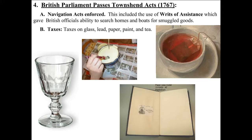In 1767, after the Stamp Act was repealed — meaning taken away or canceled — the Townshend Acts were passed. First, the Navigation Acts were enforced, which is the rule that the colonies could only trade with Great Britain and no other country. That goes back to the idea of mercantilism, where the only point of a colony is to make money for the home country. The Navigation Acts included the use of writs of assistance, which gave British officials the ability to search homes and boats for smuggled goods. By 1767, upwards of 80% of all goods coming into the colonies were smuggled.